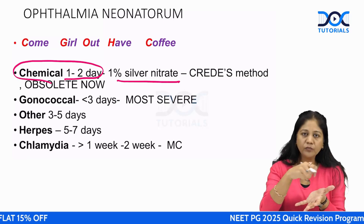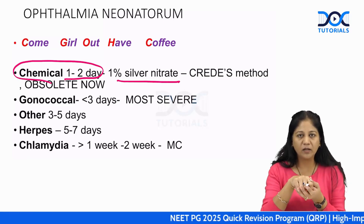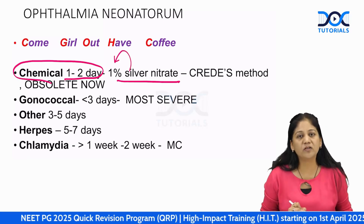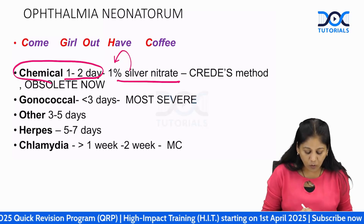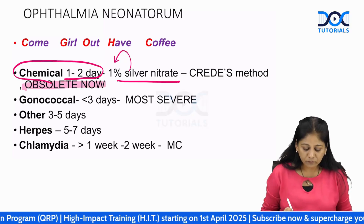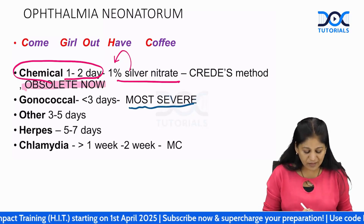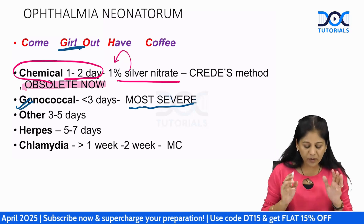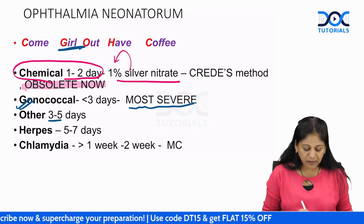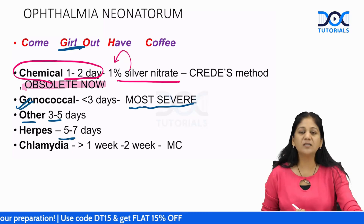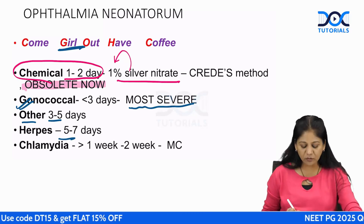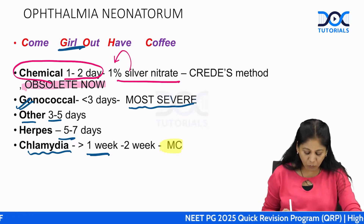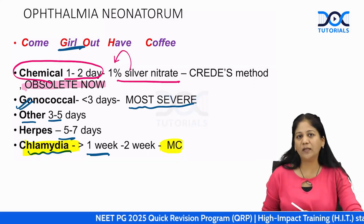Silver nitrate was put on the newborn's eye but was found to cause infection itself, so this method is now obsolete. The most dangerous cause is gonococcus ('G' for Girl in the mnemonic). After three days, it could be any other bacteria. After five days, it is herpes. Typically after one week, it is Chlamydia — the most common cause of ophthalmia neonatorum.